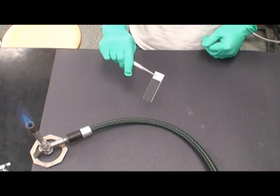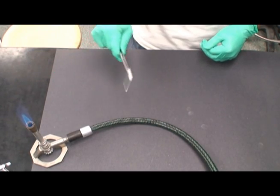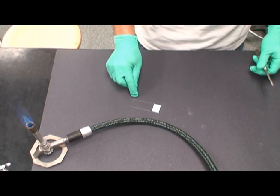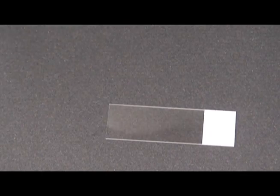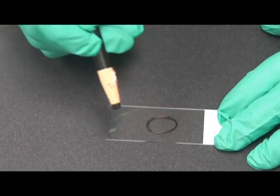The simple stain procedure begins by passing a clean microscope slide through a flame face down to sterilize it. A small wax circle is then drawn on the sterilized side of the slide to identify the location of the bacteria.